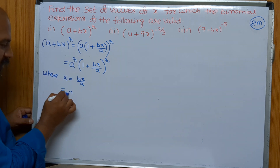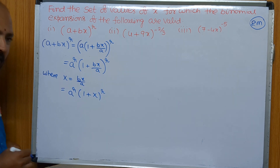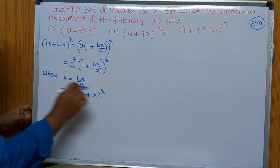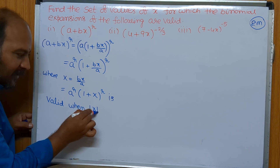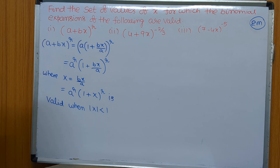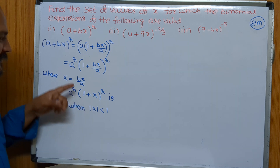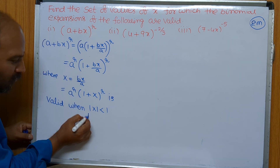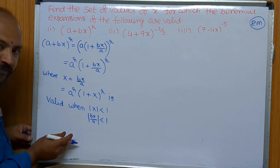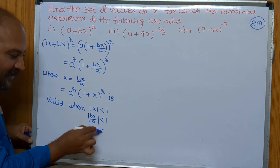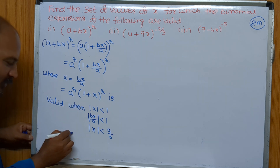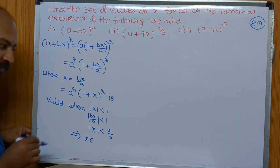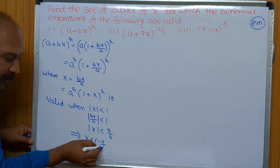Therefore we have a^r into (1 + X)^r. This expansion is valid when mod X is less than 1. So mod X value — what is mod X in this sum? X equals bx/a, so mod(bx/a) is less than 1. Except x, remaining values I am bringing to that side, so mod x is less than a/b. If you remove this modulus, that implies x belongs to the open interval (−a/b, a/b).